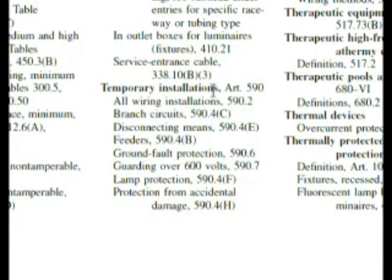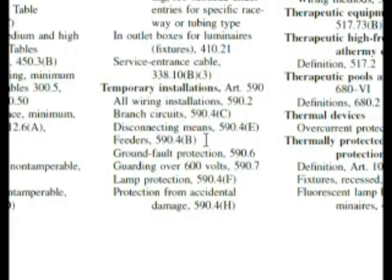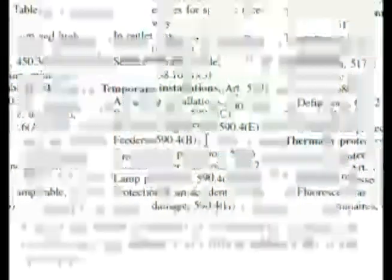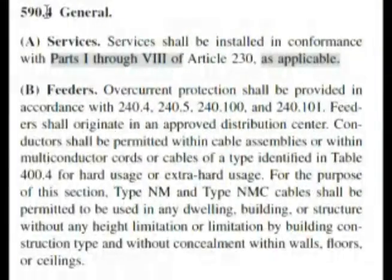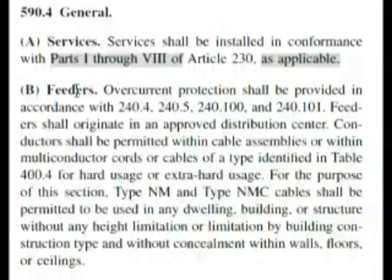Here we are at the index: temporary installations, Article 590. We have feeders at 590.4(B). Let's look there. Here we are at 590.4(B), where it says feeders.